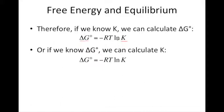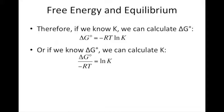Let's rearrange this slightly to solve for K. We take our equation and divide both sides by negative RT. The negative RTs cancel, leaving us with ΔG° / (negative RT) equal to the natural log of K. To isolate K, we raise e to that power, giving us K equals e raised to the power of negative ΔG standard divided by RT.